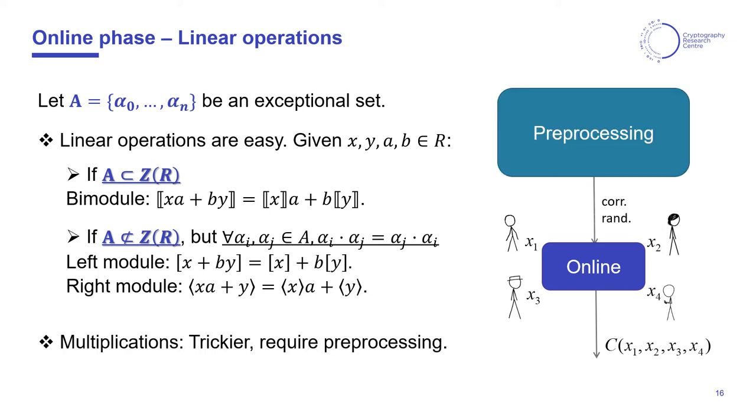As usual, multiplication will be more complicated, and we will use some preprocessed randomness for that.